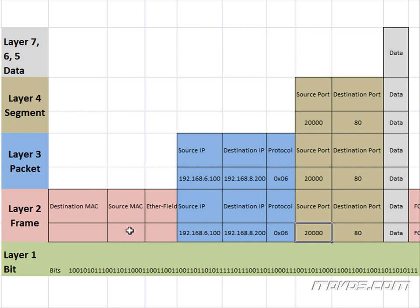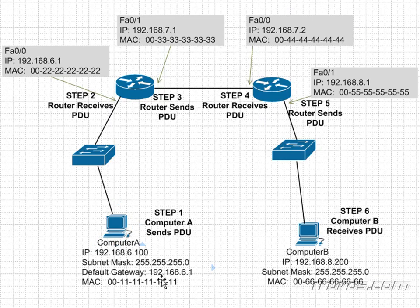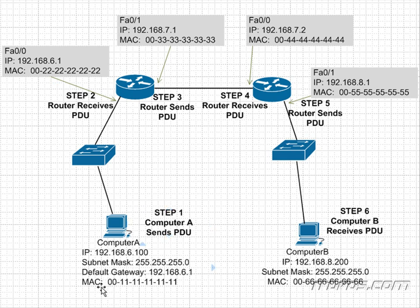Let's go back to our diagram and take a look. We figured out that Computer B's IP address is not in our subnet, so we need to send this frame to our default gateway. We're going to be using the destination MAC address of 00-22-22-22-22-22, and we figured that out with an ARP request. The source MAC address is us, which is 00-11-11-11.